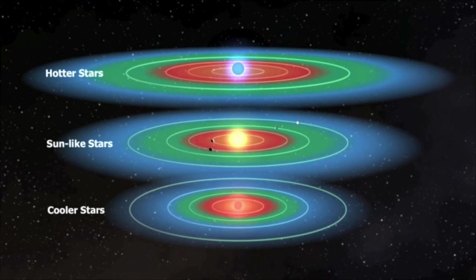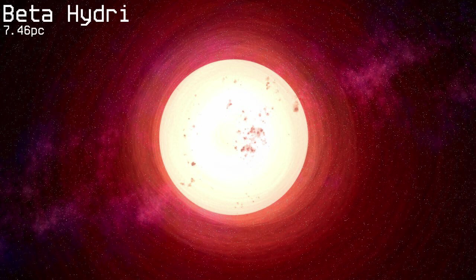Its habitable zone, if it has any habitable planets, would be at 2.2 AU, almost at our asteroid belt. Surprisingly, studies of its solar activity suggest that as sun-like stars age, their activity decreases, at least until the red giant phase.